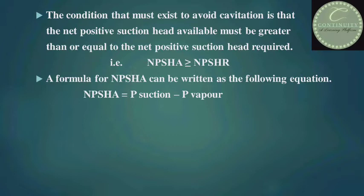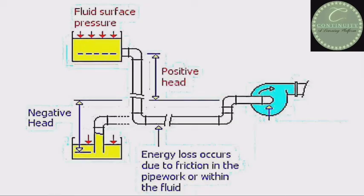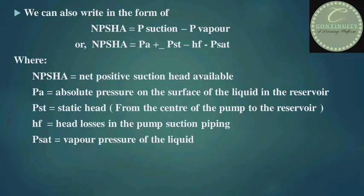The formula for NPSHA can be written as: net positive suction head available equals the difference between the pressure at the suction and the vapor pressure of the liquid being pumped. Liquid may come from storage situated above the pump or from storage situated below the pump. If liquid comes from storage above the pump, pressure at suction is measured as a positive head. If from storage below, it is measured as a negative head.